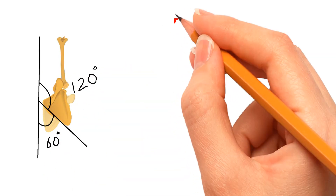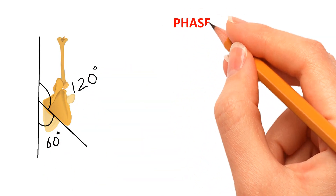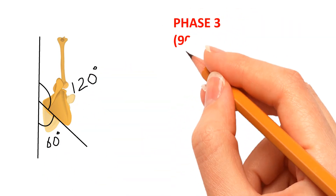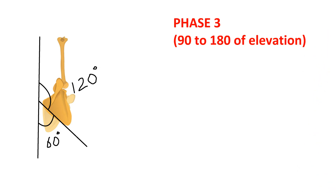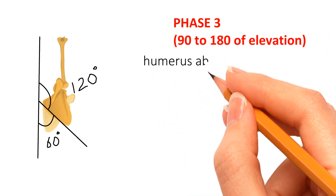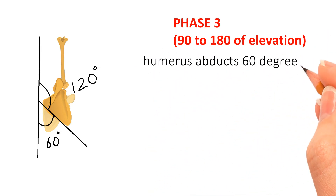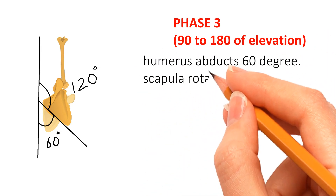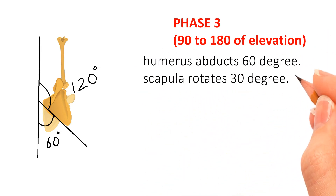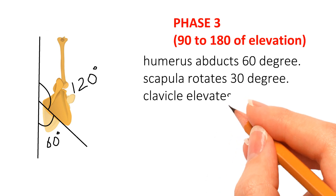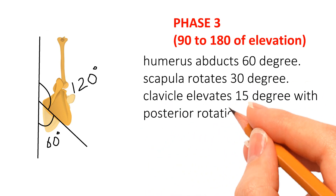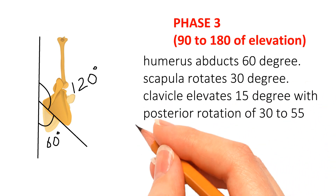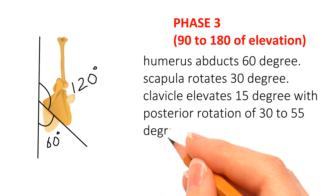Now Phase 3: from 90 to 180 degrees of elevation, the humerus abducts 60 degrees, the scapula rotates 30 degrees, the clavicle elevates 15 degrees, and the clavicle undergoes posterior rotation of 30 to 55 degrees.